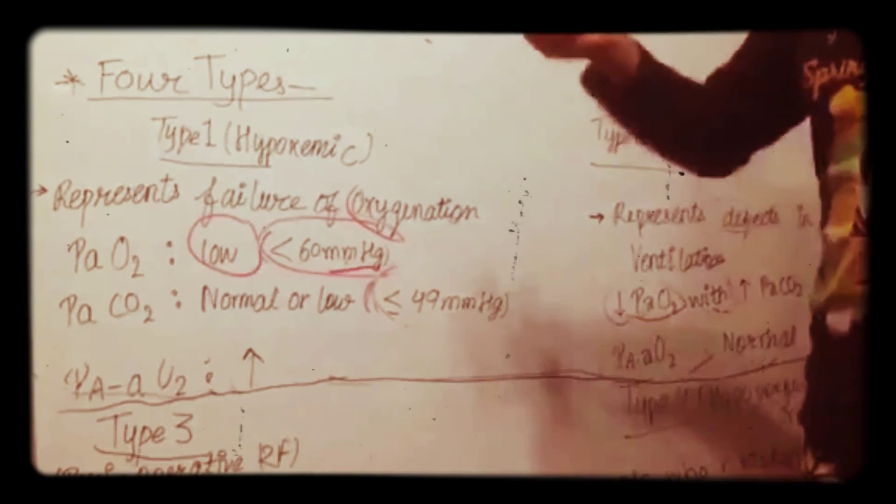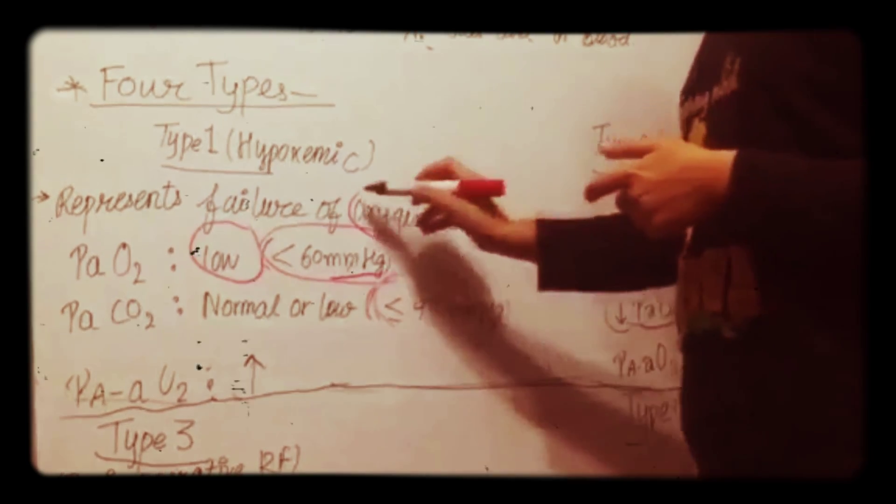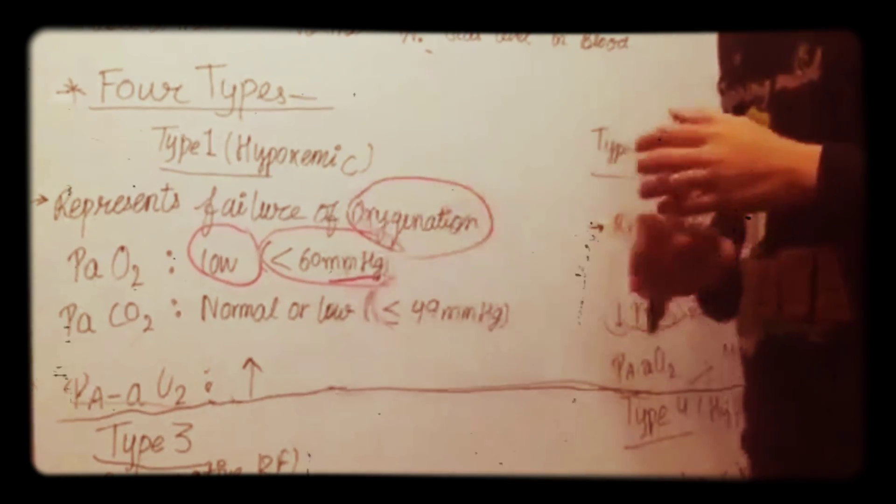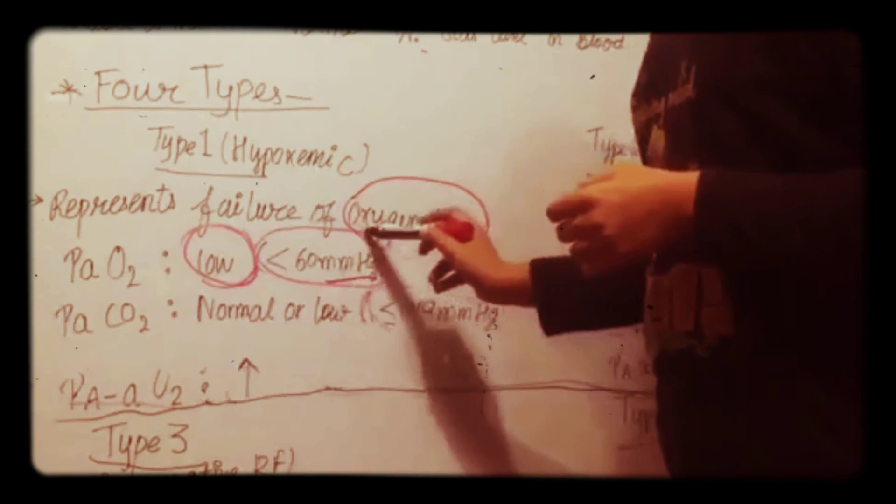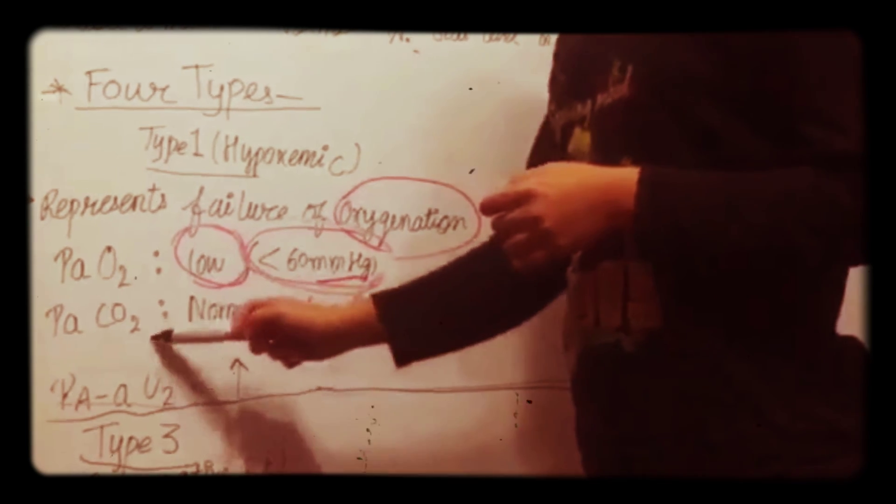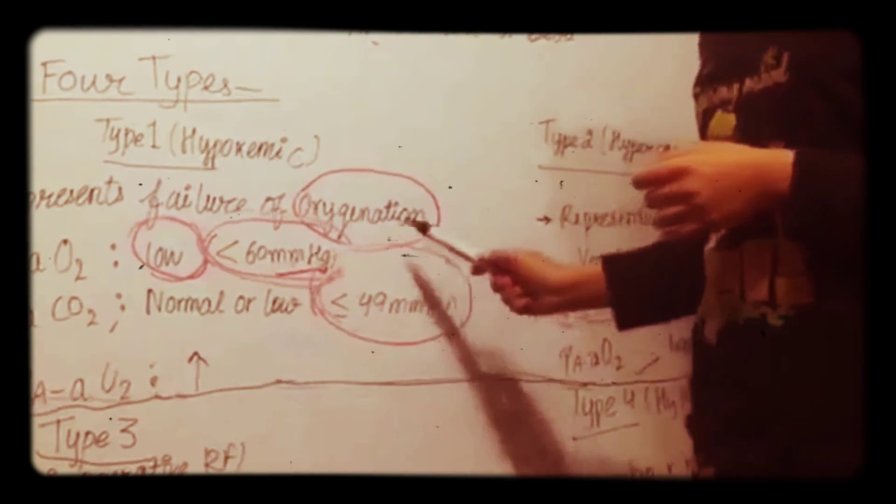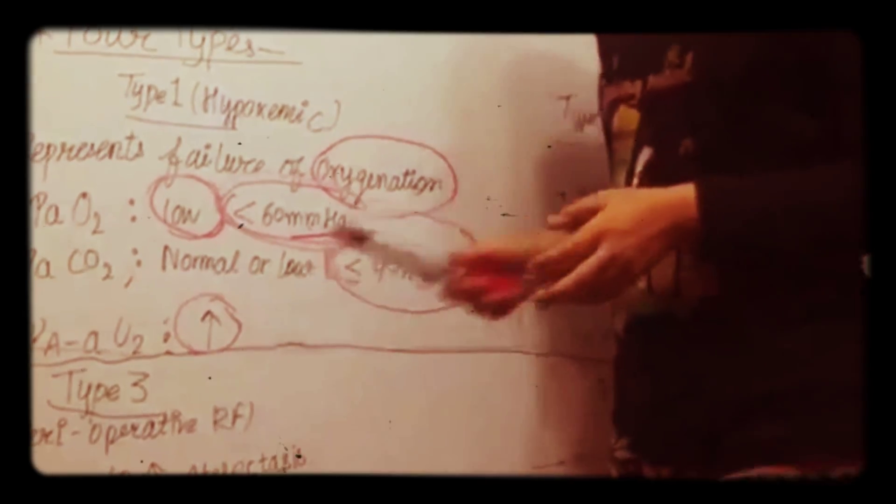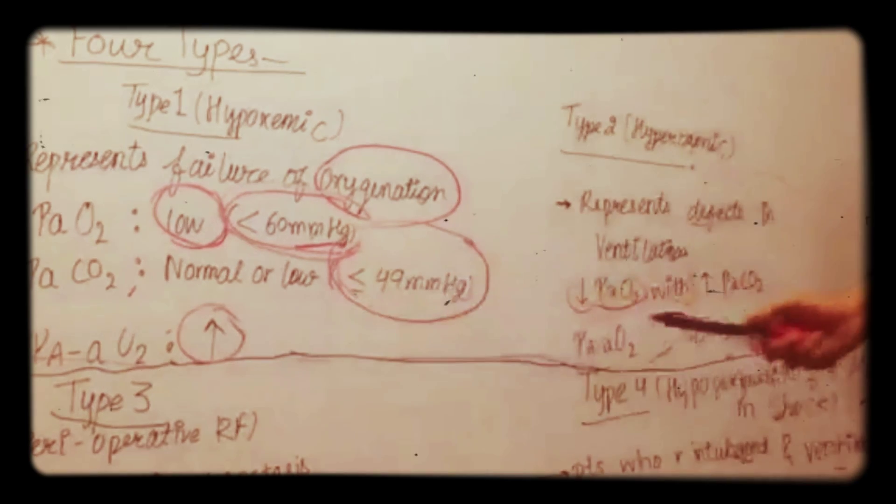In type 1, hypoxemic respiratory failure, it represents failure of oxygenation mainly, in which low PaO2 which is less than 60 mmHg and normal or low PaCO2 which is equal to or lower than 49 mmHg. There is also increase in A-a gradient which is alveolar arterial gradient.